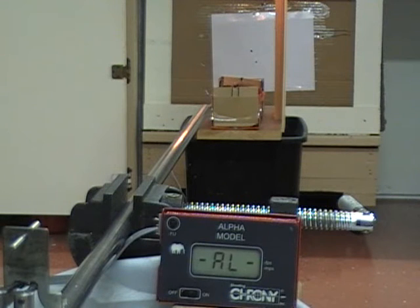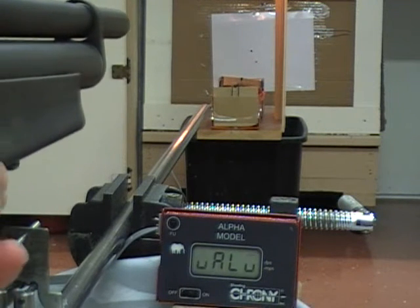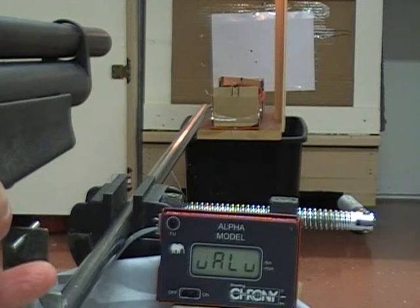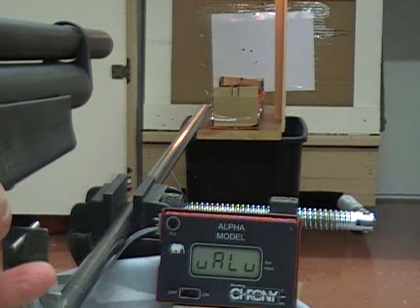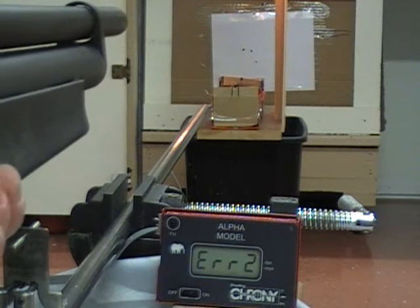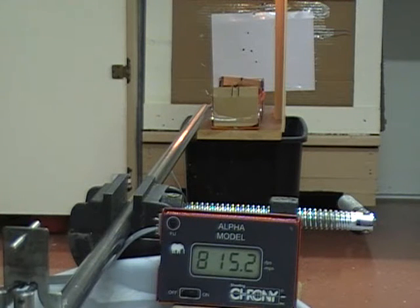I'm going to take this Marauder and shoot it across the chronograph. I'm going to be shooting at kind of an odd angle. It's a .22, just 14.5 grain pellet. I'm going to hopefully get this across there without hitting anything I'm not supposed to. Missed it. Try it again. There we go, 815. That's about right for this gun, so we know we're in the ballpark.